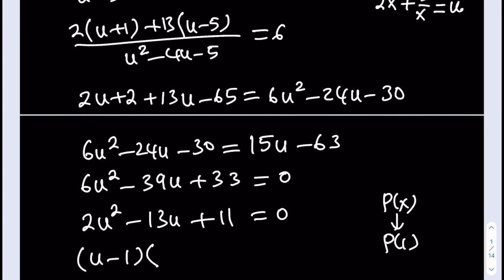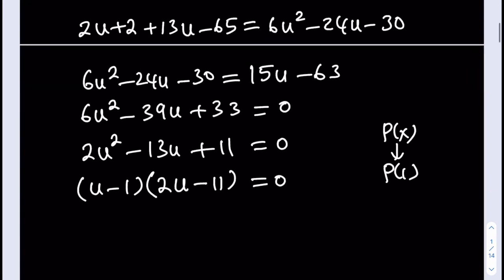Well, the other factor is very easy to form because you have the first and last term. So you can just go ahead and... 2u. Happy birthday to you. That's a 2u minus 11 because I do need a constant term of positive 11. So that's equal to 0.